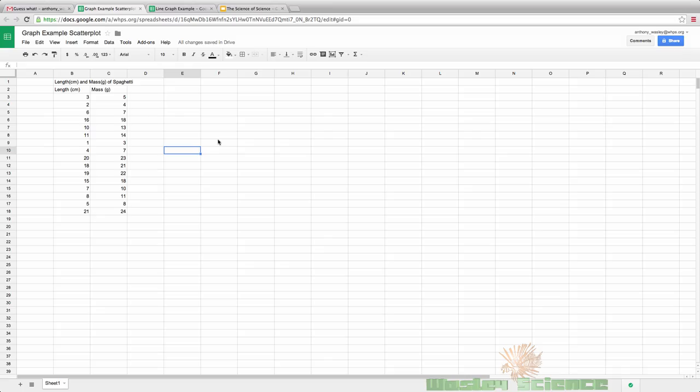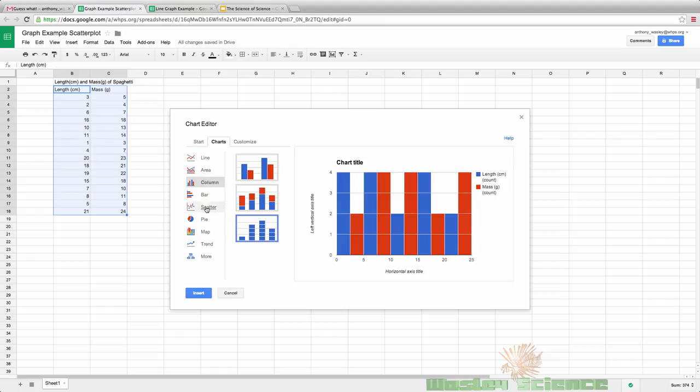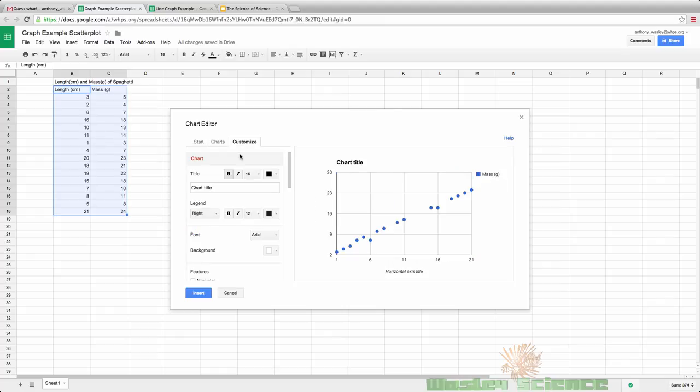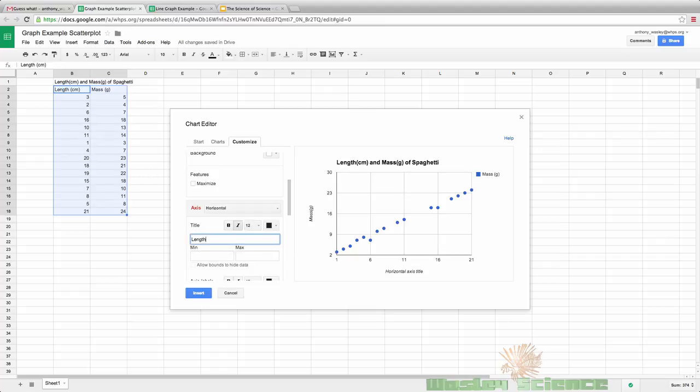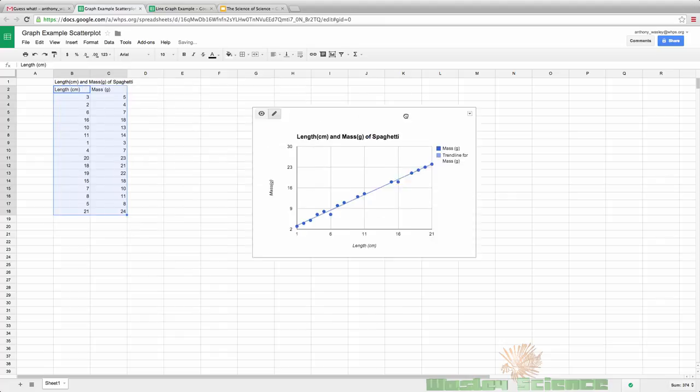All right so now I'm going to show you how to make a scatter plot using Google spreadsheet. So you can go ahead and highlight your two variables. I have length and mass. I measured the length and mass of spaghetti and insert chart. Go to charts, scatter. Click on the top box here and then customize and you can go ahead and plug in your variables here. So if you scroll down and go to this box you can switch it to vertical and then switch it to horizontal and you can see that both of my variables are plugged in.